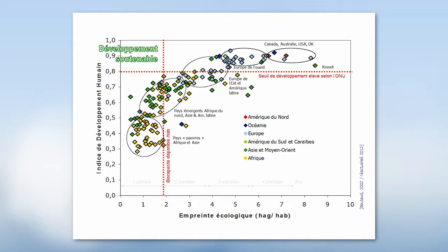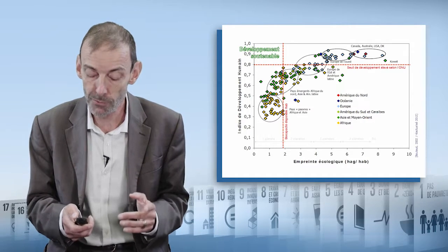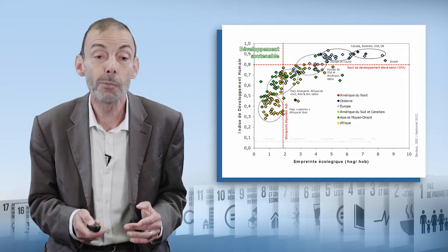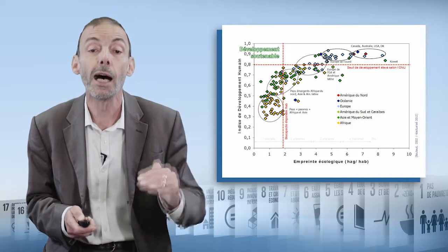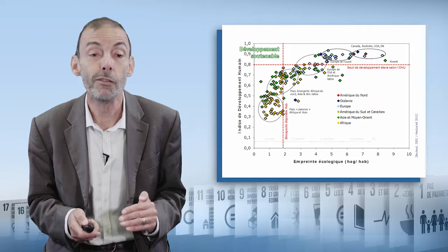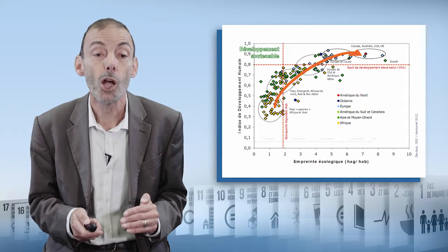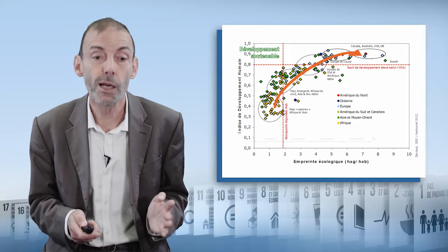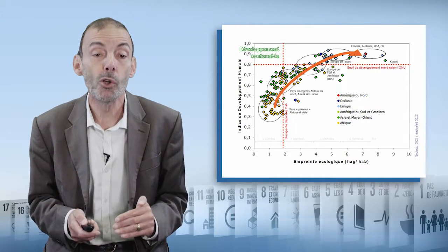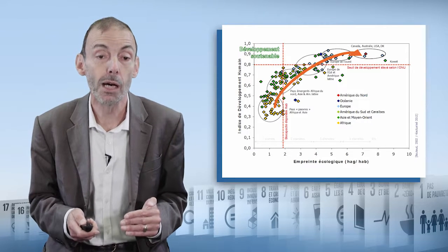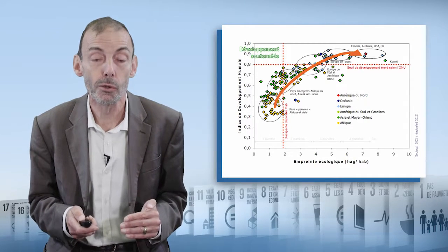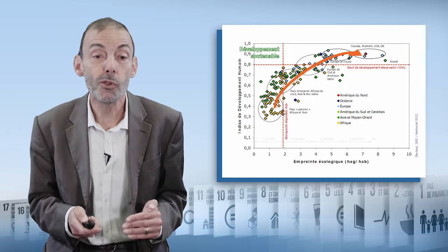In order for the planet to be sustainable, you should not go beyond the red lines. So in order to be in a sustainable development situation, you need to be in that top left-hand corner. And no country is in there. All of the countries that have succeeded in going beyond 0.8 HDI followed the same path — they did so by adopting a model of development that is unsustainable. You can see the path here; it's this orange arrow.